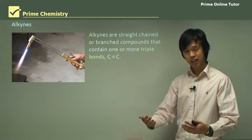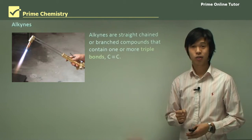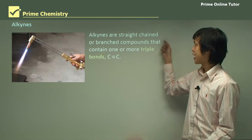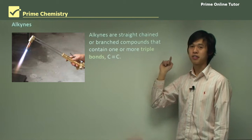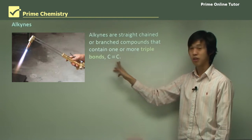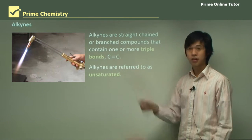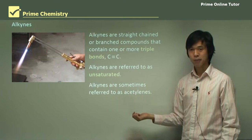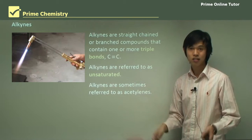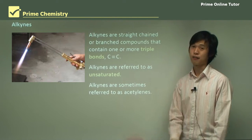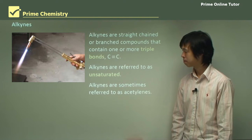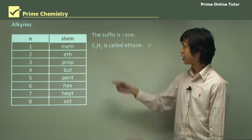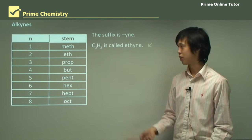Alkynes — we've moved from alkane to alkene, and now we're at alkyne. Think of the oxyacetylene torch used in metalwork; the fuel is an alkyne. An alkyne is a straight-chain or branched compound that has one or more triple bonds — so instead of a double or single bond, we have a triple bond: C triple-bonded to C. They're unsaturated because the triple bond stops the maximum number of hydrogens attaching. In the older naming system, alkynes are sometimes called acetylenes — hence "oxyacetylene torch". The same prefix structure applies, but the suffix is "-ine". So C₂H₂ is called ethyne.